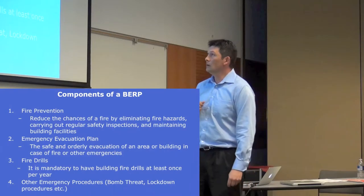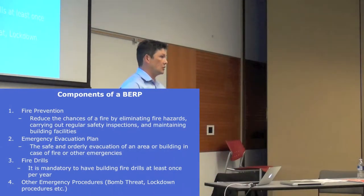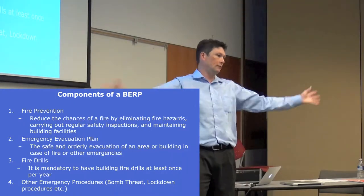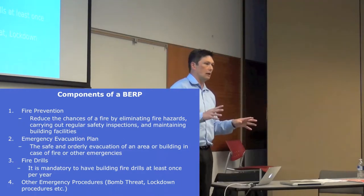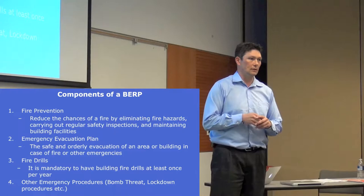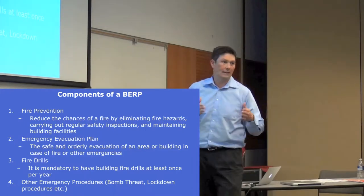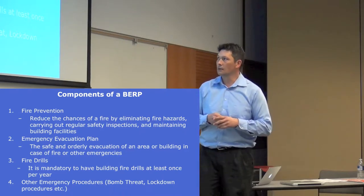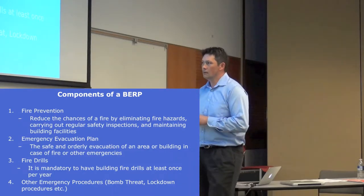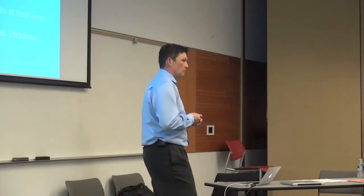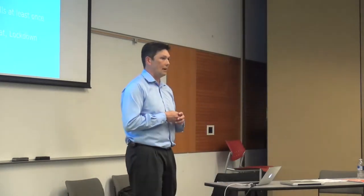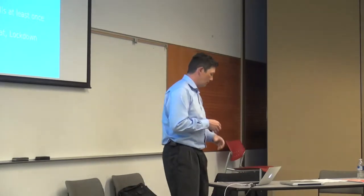Moving on to fire prevention. With your regular inspections, make sure you're looking around for combustibles that are accumulating — that general housekeeping thing. Good housekeeping generally means you'll have less chance of having a fire or a serious incident. Review your building and evacuation plan; those regular fire drills are huge and we'll go over those in a bit. Other emergencies on campus include bomb threats and lockdown procedures — there's a variety of things that can happen and we're going to try and get through the major ones.